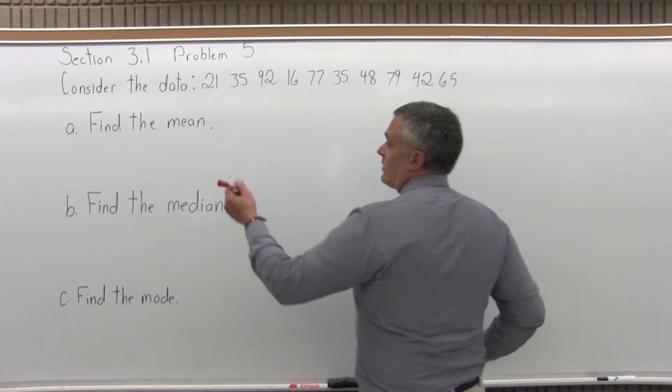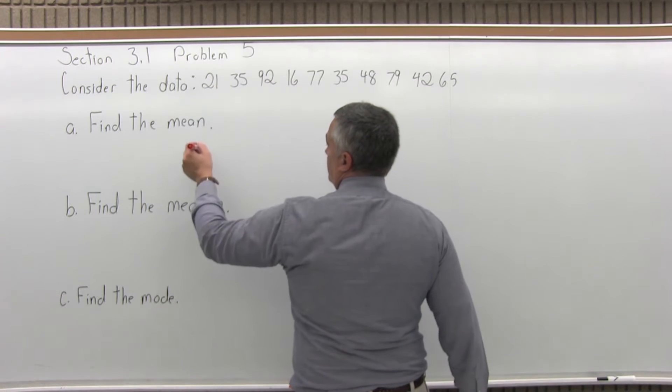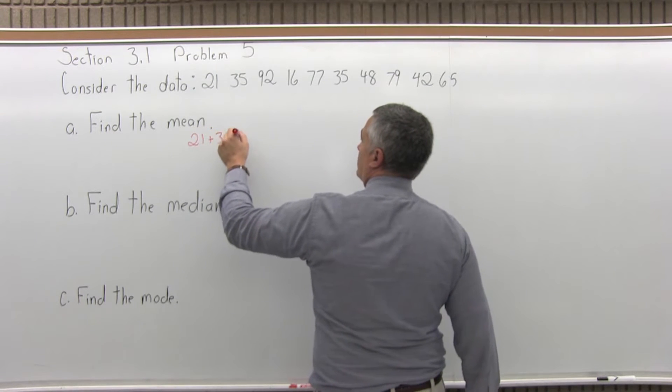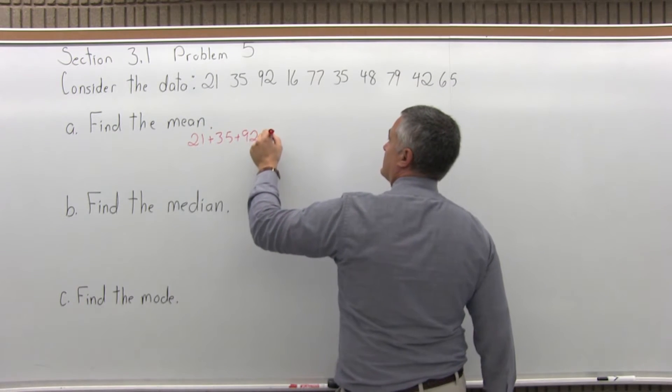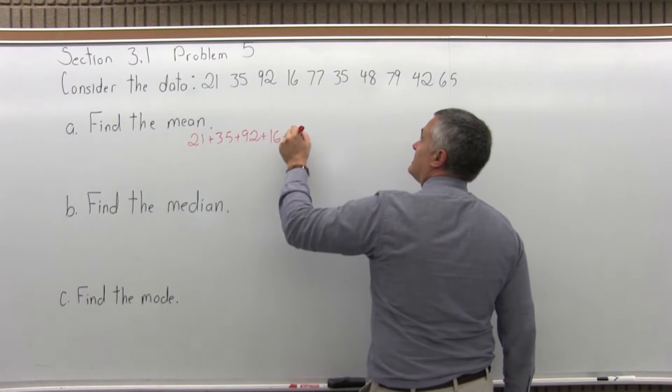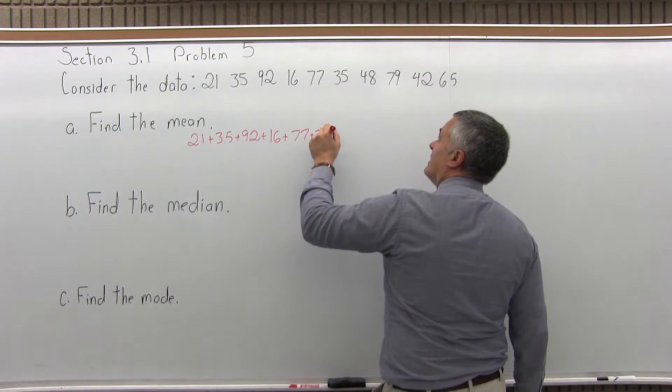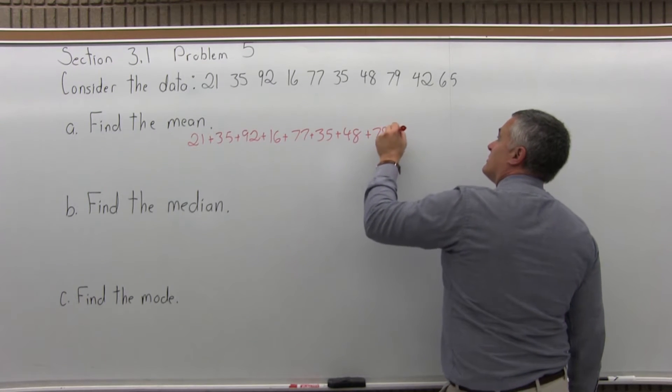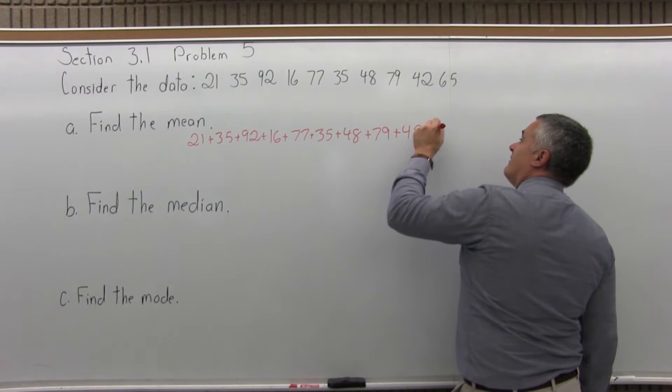So for the mean, what we want to do is get a total of all our data values. So we will add 21 plus 35 plus 92 plus 16 plus 77 plus 35 plus 48 plus 79 plus 42 plus 65.